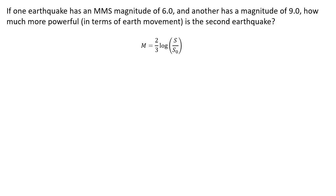The formula for the MMS scale is this: the moment M, which is the scale measure, is 2/3 times the log, and that's the common log, log base 10, of s over s0, where s is the earth movement of the earthquake and s0 is a baseline measure.